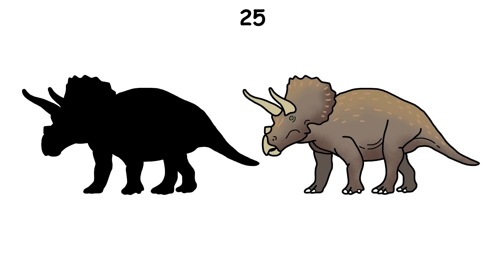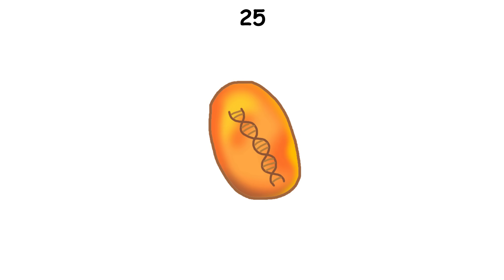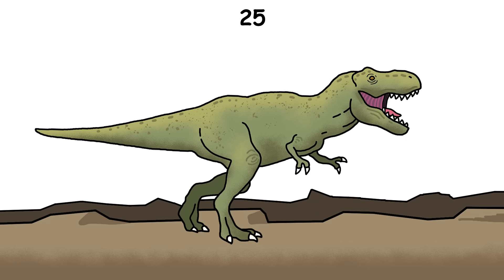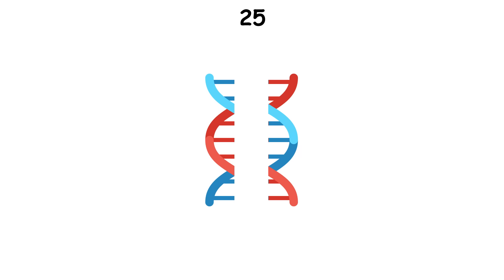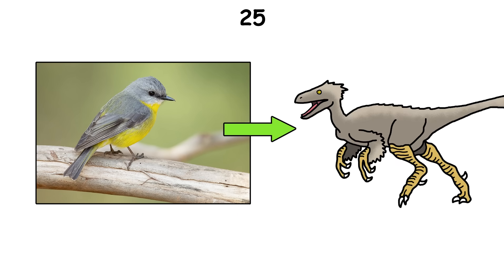The idea of cloning dinosaurs from DNA in amber is fiction, as DNA breaks down quickly after death. Even in perfect conditions, it's unreadable after millions of years, and keep in mind that most dinosaurs went extinct 66 million years ago. However, scientists are exploring reverse-engineering bird DNA, since birds are dinosaurs.